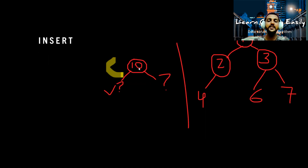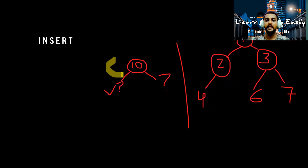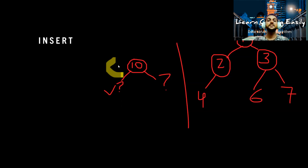Let's say we have a node 10. In a binary tree, you can insert a new node anywhere you want. But we can take one simple approach: we will always insert the node in level order. Level order means we check what nodes are at level one, then jump to level two from left to right, then level three, and so on. This technique is known as level order traversal, and we will follow it when inserting nodes in a binary tree.